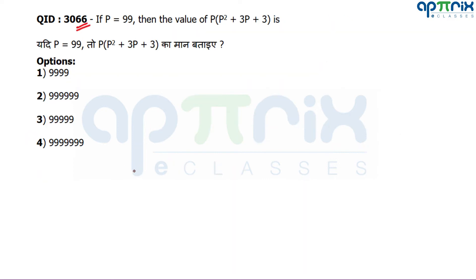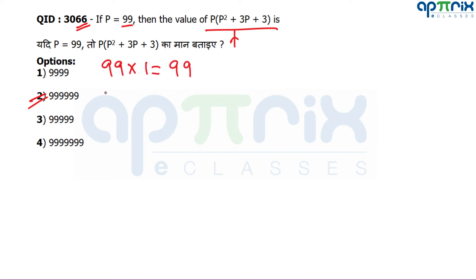Question number 66: If p = 99, what is the value of the given expression? Without spending time computing, the answer is 9999. The fundamental logic: 99 × 101 = 9999. If you multiply 99 by 101, you get 9999. Multiply 99 by 10101, you get 999999 — when the multiplier has three '1' digits in alternating form, you get four 9s.